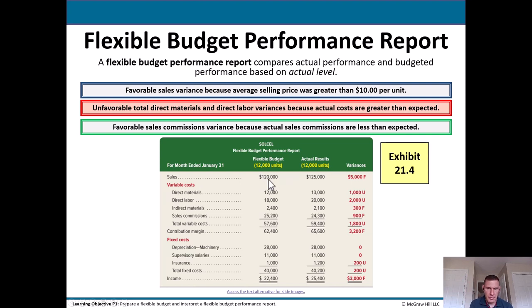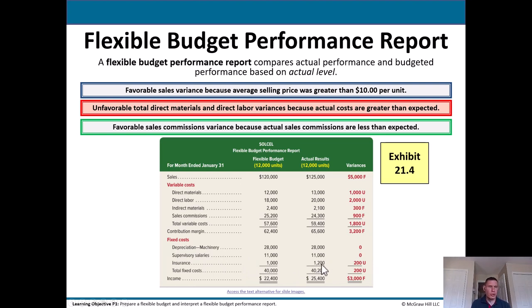Based on that, we should have made $120,000 in sales; we made $125,000 — a little higher, so that's good. Materials: based on selling 12,000 units we should have spent $12,000, but we spent $13,000 — unfavorable. Direct labor: should have spent $18,000, we spent $20,000 — also unfavorable. For fixed costs, depreciation and supervisor salaries were good, but insurance was $200 higher — maybe the rate went up at renewal. Based on everything — sales, variable costs, contribution margin, and fixed costs — we should have made $22,400. We actually made $25,400, so $3,000 more than planned. Favorable means net income goes up; unfavorable means net income goes down.